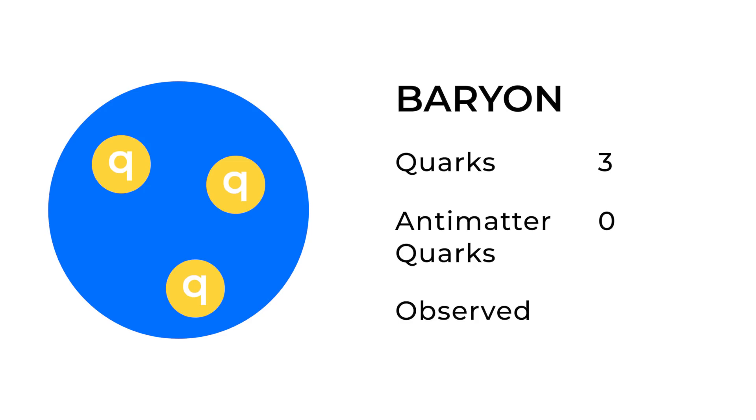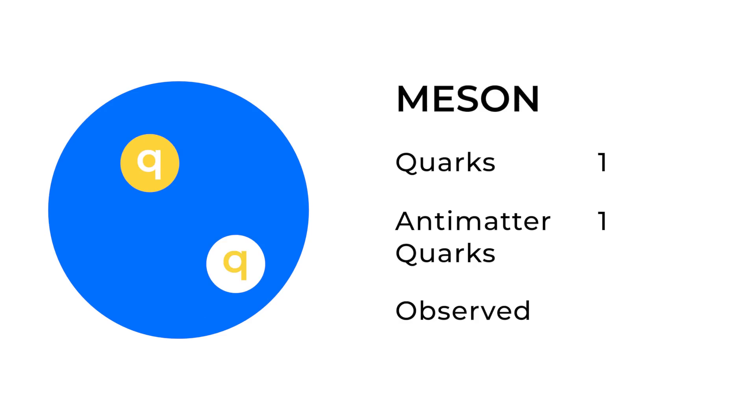The most familiar baryons are the proton and the neutron. However, there are other types of particles called mesons, which are a quark and antimatter quark pair. So those are the two most common ways in which quarks can be combined. The three quarks in the baryons and the matter-antimatter pair of quarks in the mesons.